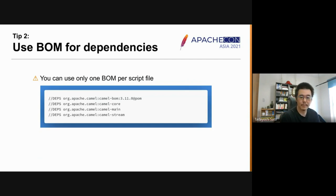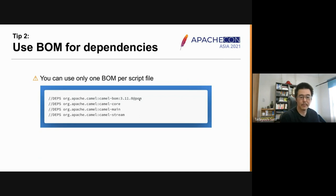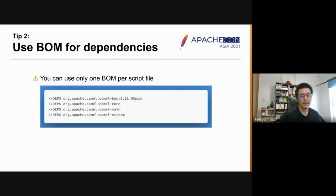To use a BOM, put it at the beginning of the dependencies and don't forget to append `@pom` to it. It's not allowed to put a BOM in the middle or the bottom of the dependencies. Another caveat is that you can use only one BOM per script — this is a limitation of the current JBang implementation.